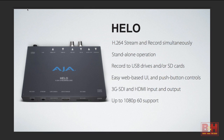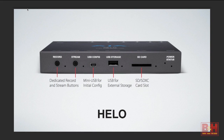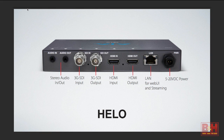Like many of the AJA network-based products, it has a simple UI and a nice web server built in for configuration. It also has a USB on the front for configuring network settings. It has USB and an SD card slot for storage. Hilo also has the ability to mount network shares and record directly to various network-accessible drives on your LAN. In terms of connectivity, we've got stereo audio in and out, 3G SDI and HDMI inputs and outputs, allowing you to monitor your signals, convert, capture, and stream all in one nice little box.